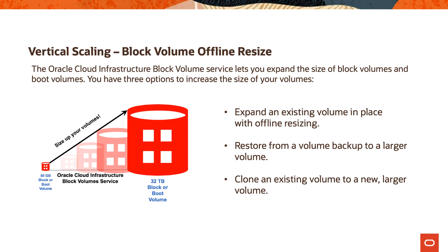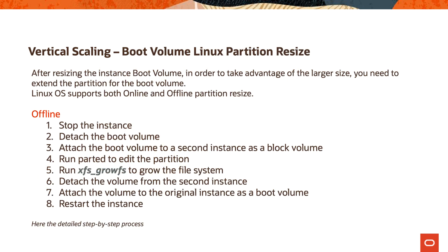It's better to start small and then increase, but it comes down to what volume size or performance you actually need. If you need a high amount of performance you might start with a larger volume to get a certain number of IOPS. For vertically scaling a boot volume with a Linux partition resize, the steps are: stop the instance, detach the boot volume, attach it to a second instance as a block volume, run parted to edit the partition, run the necessary OS commands, then attach it again and restart the instance.